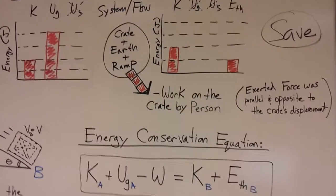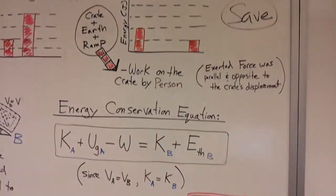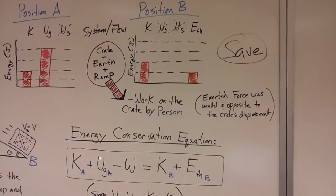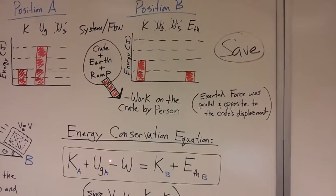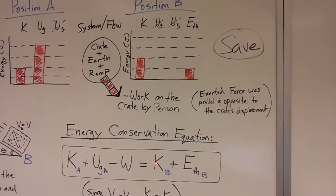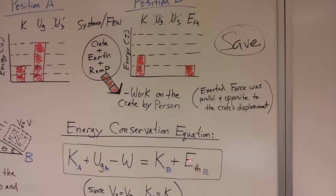And so if we look at our energy conservation equation, which we can get from an energy bar graph, the kinetic energy in the beginning plus the gravitational energy minus the work done or the energy transferred out is equal to the final kinetic energy plus the final thermal energy, which is at point B.